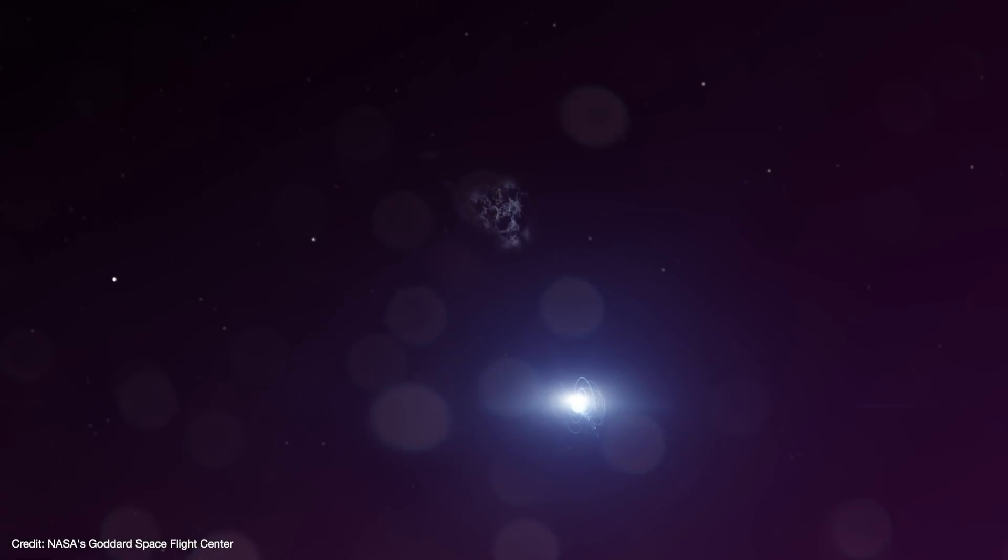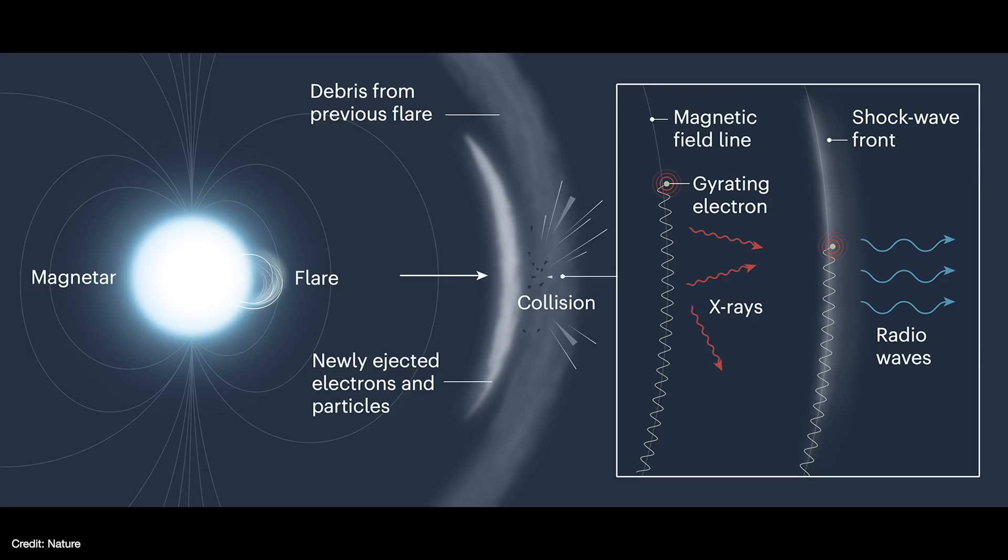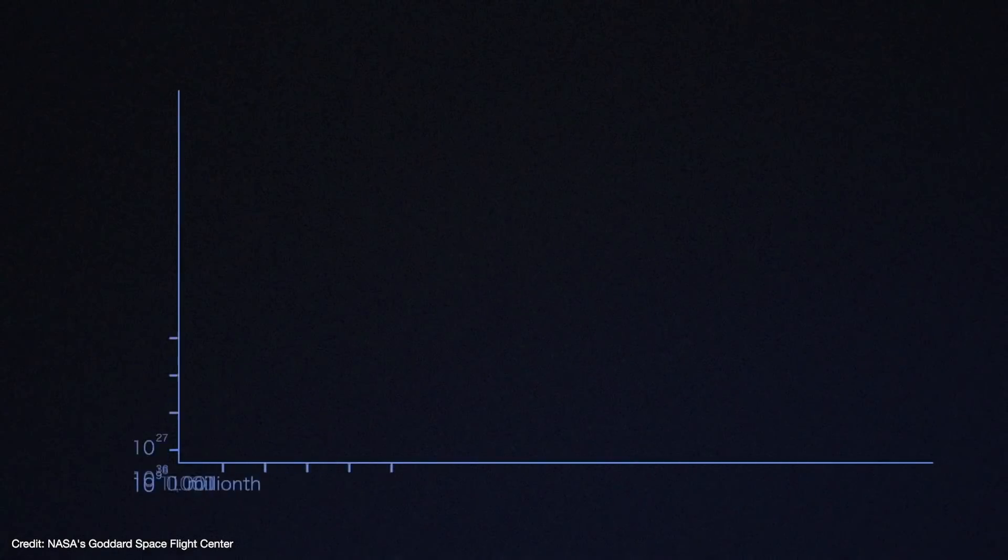But what exactly about the outburst caused the FRB? One possible mechanism is that the magnetar produced a super short flare that lasted less than a millisecond. The particles unleashed in the flare collided with particles that had been emitted from the previous flares during the storm. The collision generates an outward moving shock front, which in turn produces strong magnetic fields. The electrons gyrate around the magnetic field lines and emit a burst of radio waves. The shock wave also heats up the electrons which then causes them to emit X-rays.